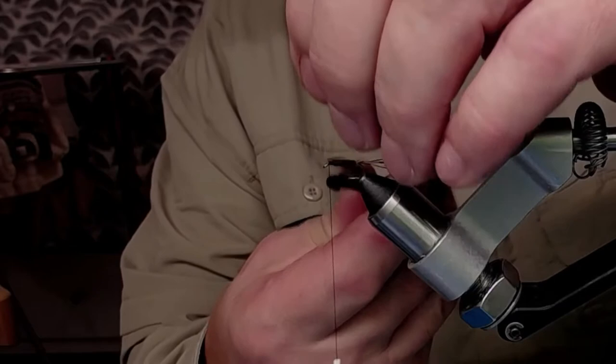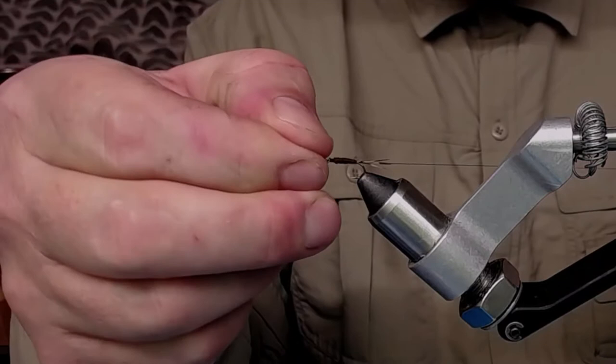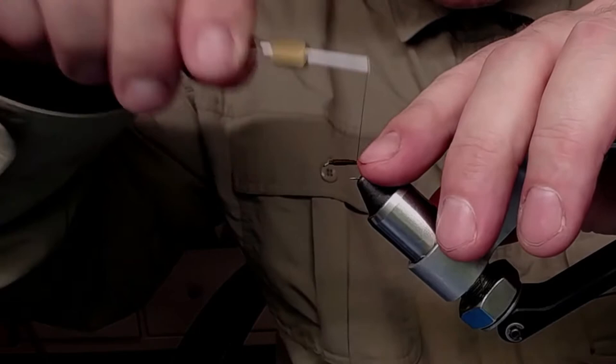Now I make a little half hitch in front here. And now you take your thread back. Down and under the tail. And now you can use your tying thread as a rib.